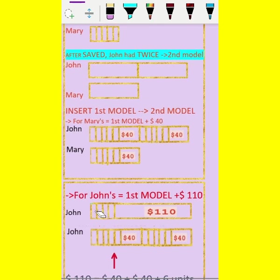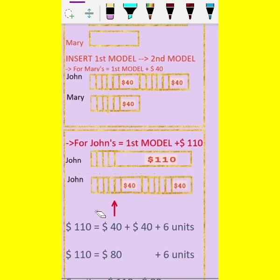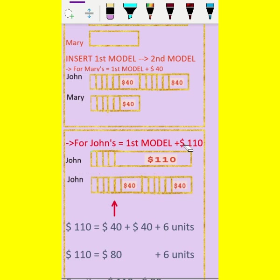Now, if we cut here, we can align the equal 4 units. After cutting, we have 6 units remaining on one side. So if we cut at this point, we will have $110 equal to 6 units